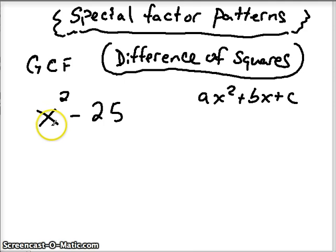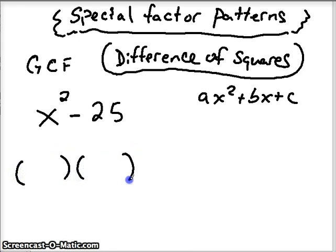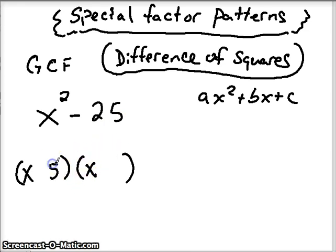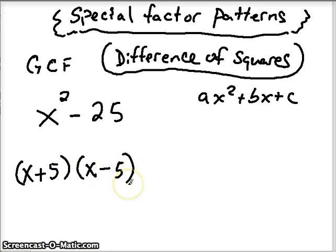If you see a square in the first and last position — the ax squared and the c — then chances are you're going to use this following pattern. You're just going to create two sets of parentheses, write your variable to the first power in the first spot of each parenthesis, and then write the square roots of this last term. So 25 — the square root of 25 is 5. You're going to put those roots there, with one positive and one negative. It doesn't matter which order — as long as you put a positive and a negative, you've got the pattern.